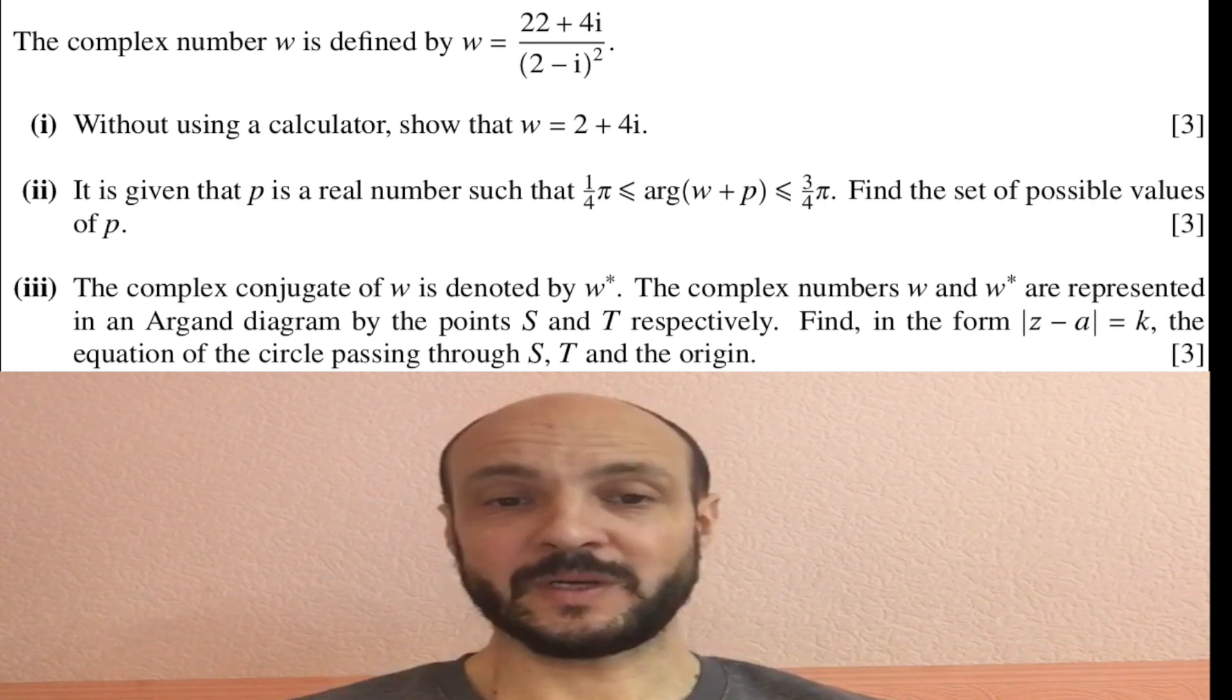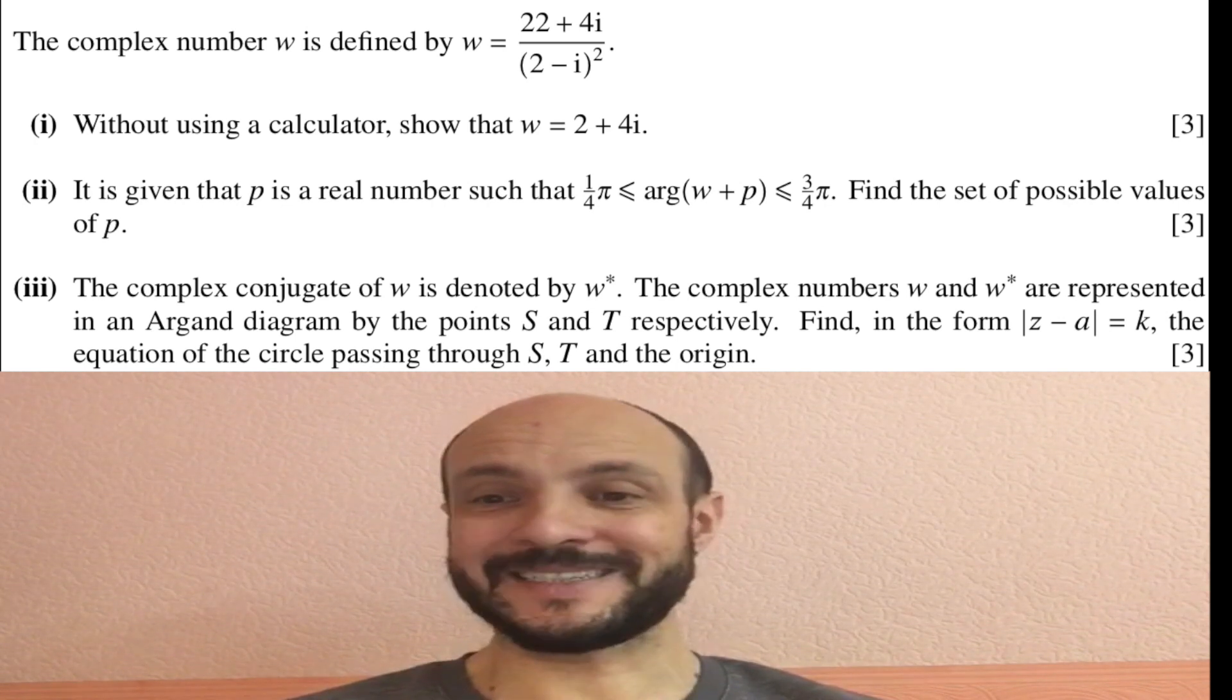Part two: It is given that p is a real number such that a quarter of pi is less than or equal to the argument of w plus p which is less than or equal to 3 quarters of pi. Find the set of possible values of p.